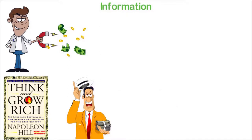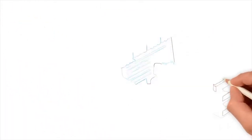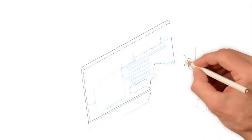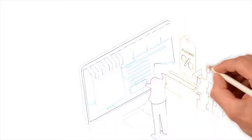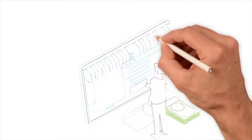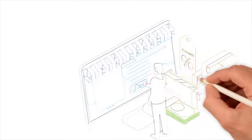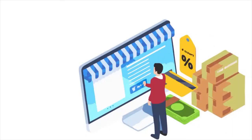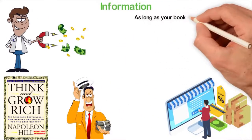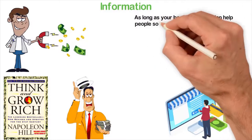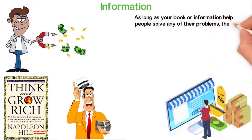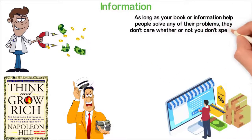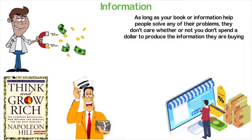This example even becomes crazily better with the internet. For example, I have more than 5 books I've written and am selling as you watch this video. Of all these 5 books, I only published one as a hard copy. In fact, I later discovered that people are willing to pay more for the soft copy of my books than for the hard copy. As long as your book or information helps people solve any of their problems, they don't care whether you spent a dollar to produce the information they are buying. These are only a few examples.